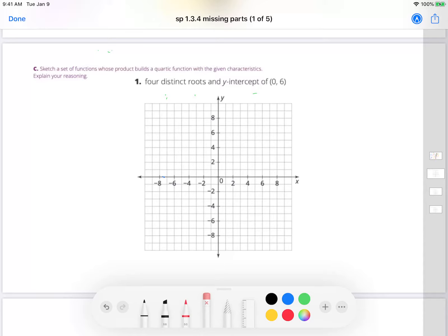Alright, let's go over question C1. Sketch a set, so a set here is going to be like linears and quadratics, and a product. So we're actually gonna build these by multiplying a quartic function, which is to the fourth power, with given characteristics.